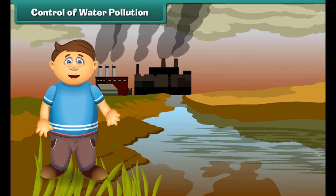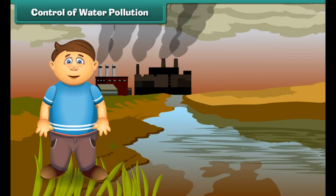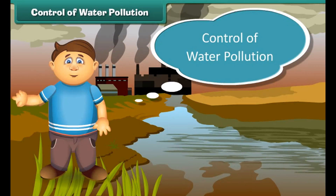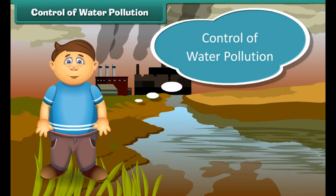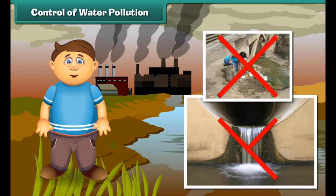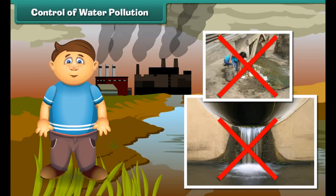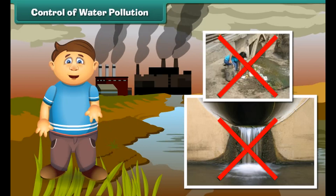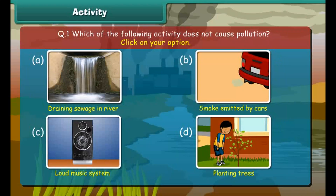Can we control water pollution? The answer is yes. To control water pollution, we should not dispose garbage and harmful chemicals directly into ponds, lakes, and rivers. Friends, now it's time to check your understanding — identify the activity which does not cause pollution.